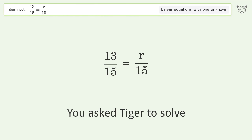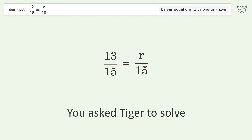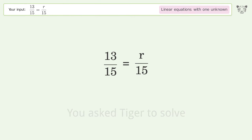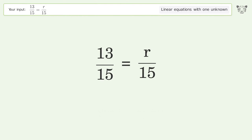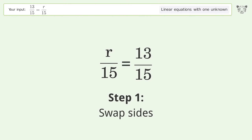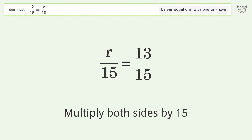You asked Tiger to solve this — it deals with linear equations with one unknown, and the final result is r equals 13. Let's solve it step by step. First, swap sides, then isolate x and multiply both sides by 15.